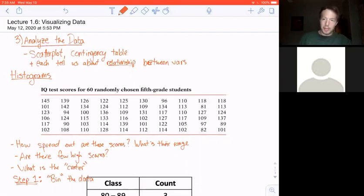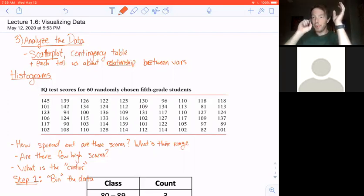Today we're going to talk a little bit more about the third step of our statistical process: analyze the data. We've already seen two ways that we can analyze data. One was the scatterplot, which is a way to analyze two numeric variables with the x and y-axis and points on the graph corresponding to different observations in the data set. And we also had a way to visualize two categorical variables with a contingency table.